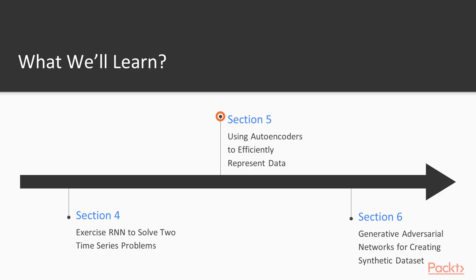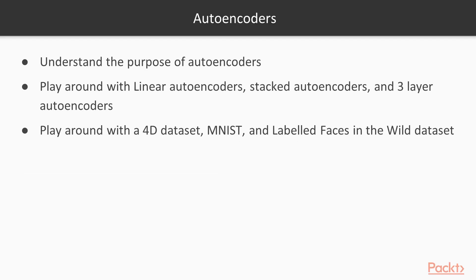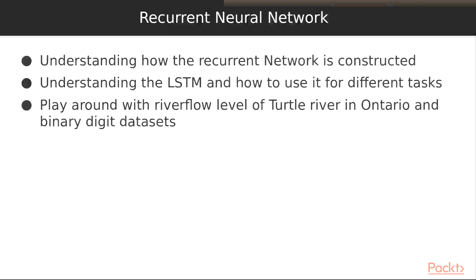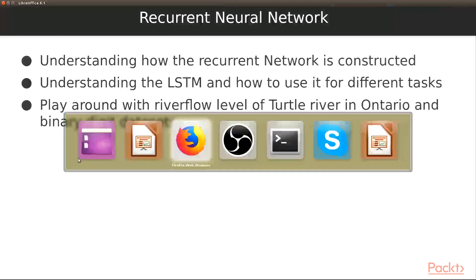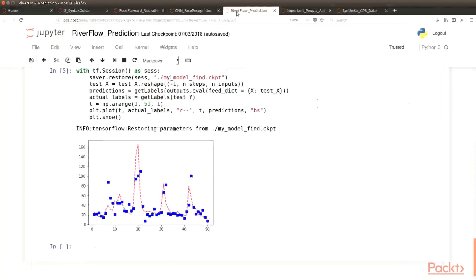Section 5: Using autoencoders to efficiently represent data. In this section we understand the purpose of autoencoders, play around with linear autoencoders, stacked three-layer autoencoders, and various datasets. We train our model and write the computational graph for building up this network, among many other things.